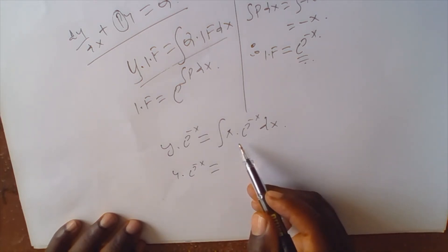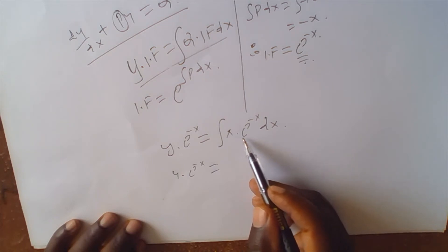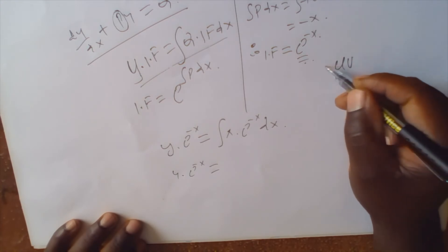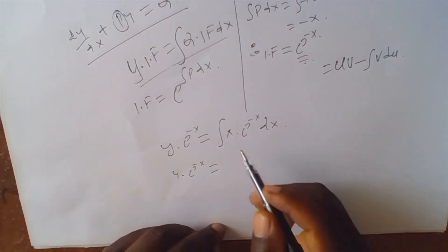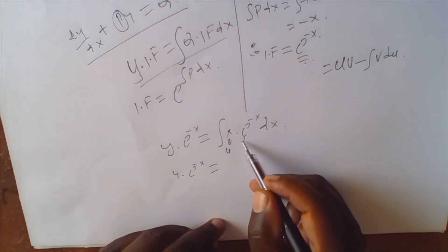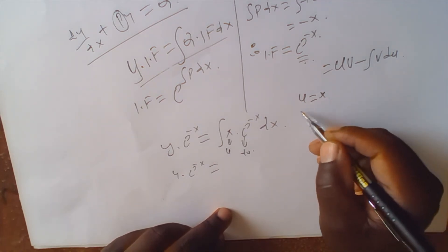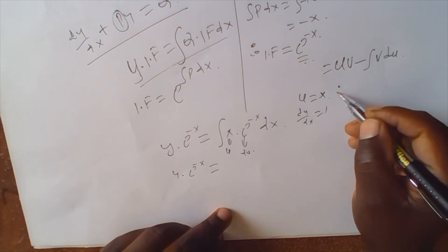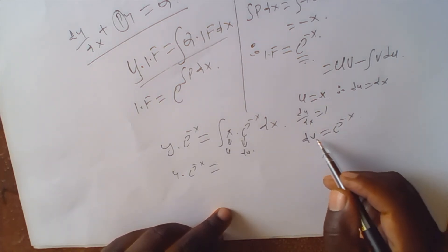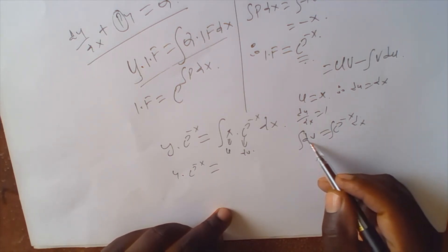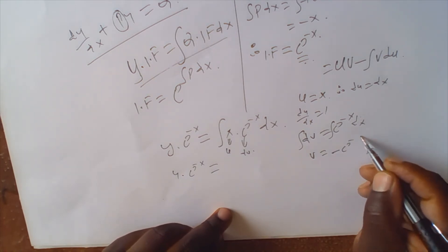We now need to integrate this by use of integration by parts. Integration by parts is given by uv equals uv minus the integral of v du. Here 2x will be our u and e to the negative x will be our dv. Therefore u equals 2x, so du/dx equals 1, meaning du equals dx, and dv equals e to the negative x dx. Integrating dv gives v equals negative e to the negative x.